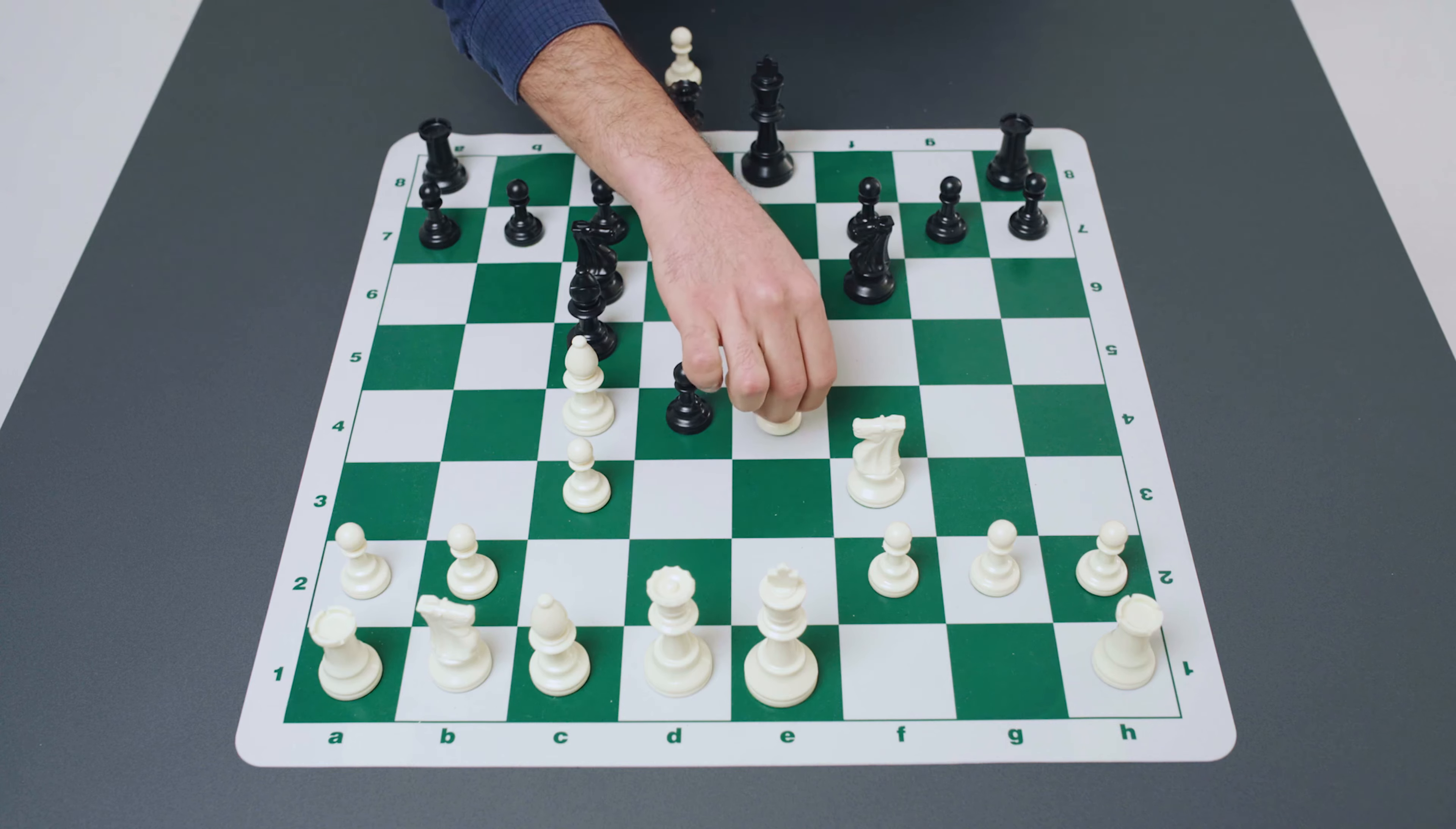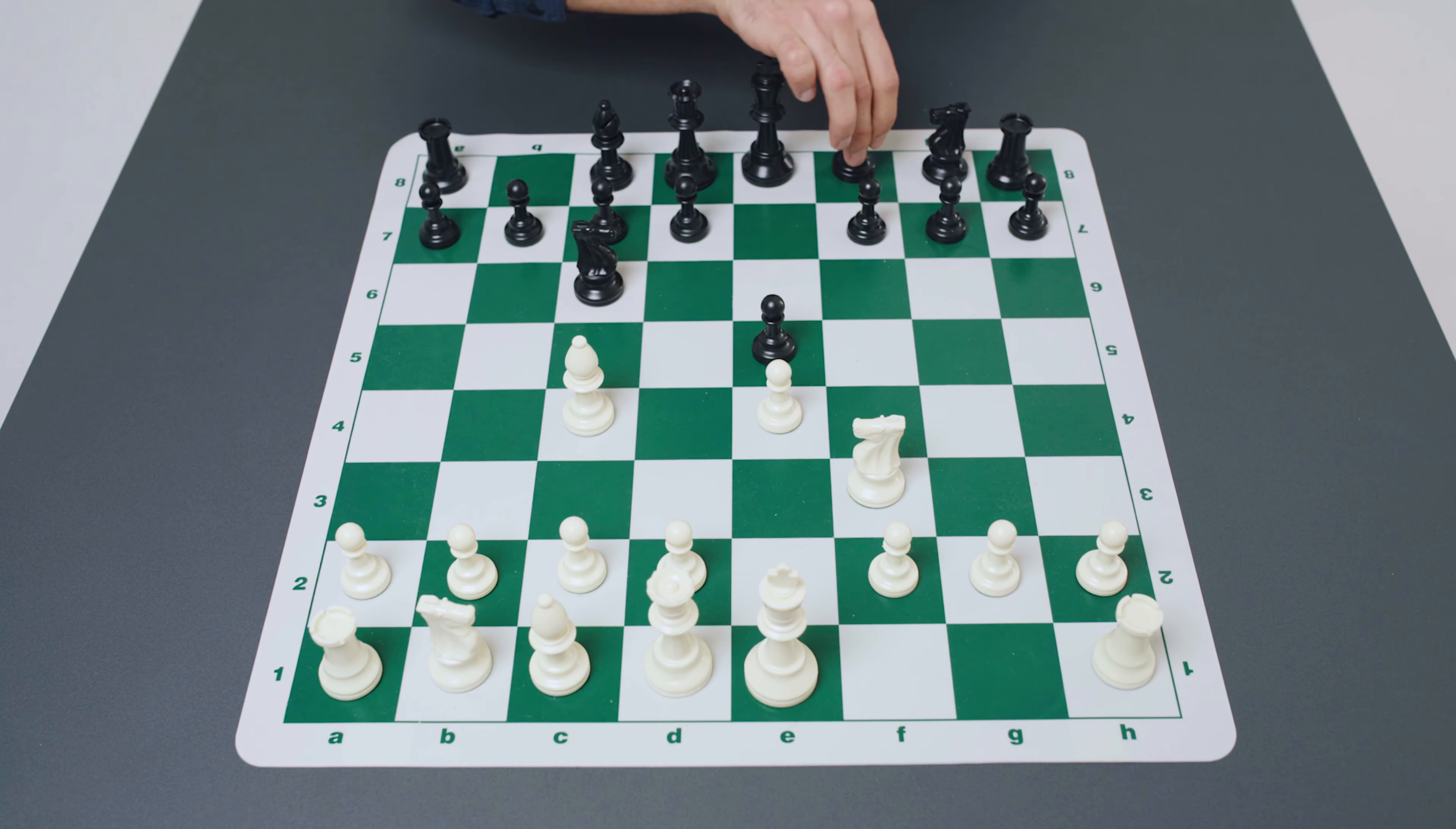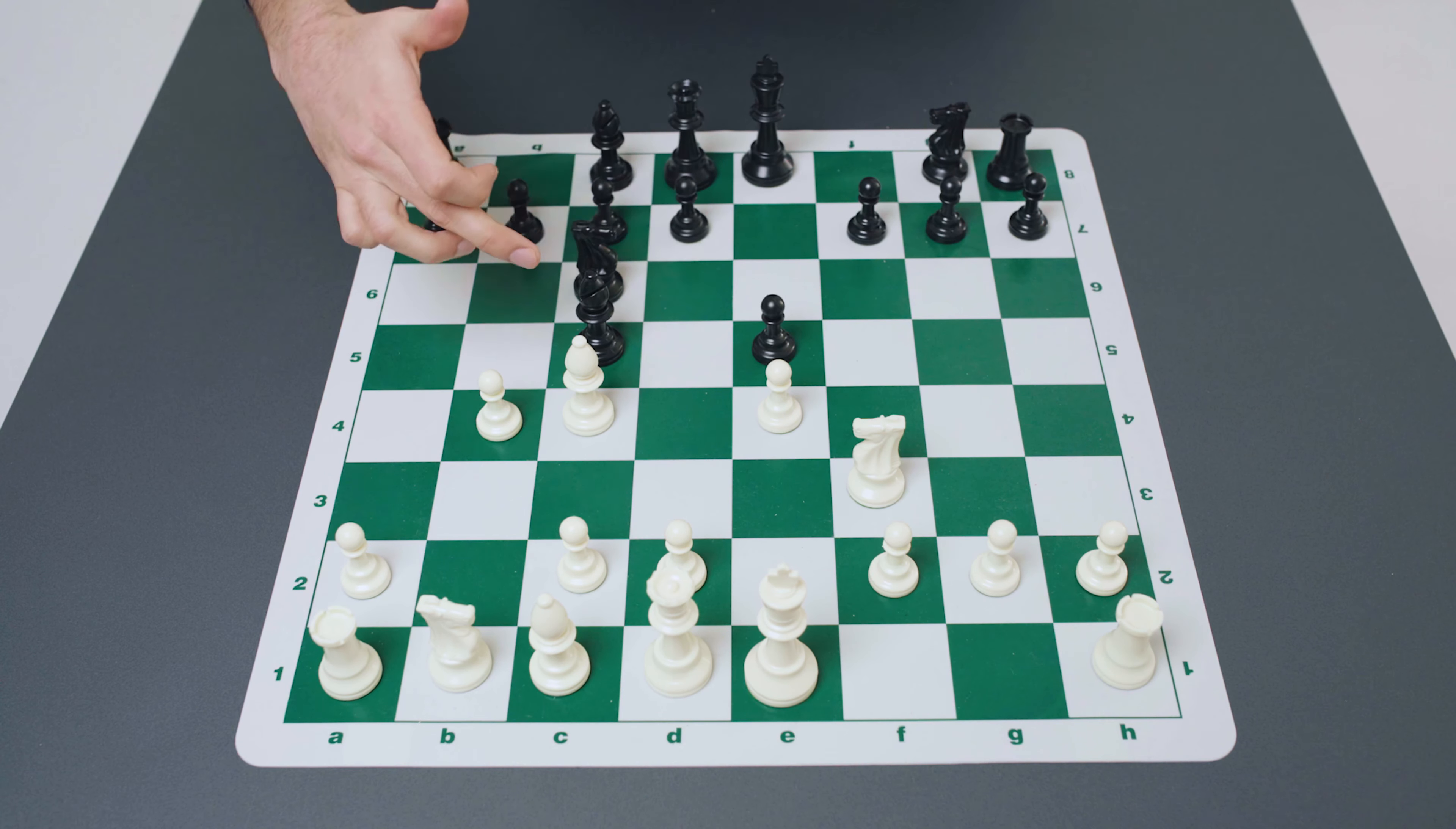Now in this situation white historically would play the move pawn to d4 and here after pawn takes d4, c takes d4, black would give this check bishop to b4 and here with a move like knight to c3 we are into Greco Gambit territory. After many years players realized that these positions actually don't pose many problems for black at all.